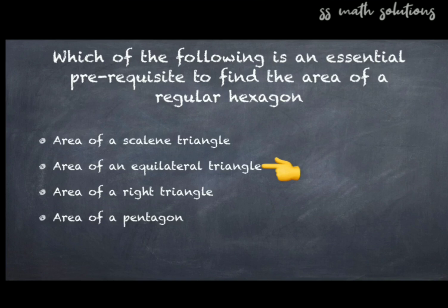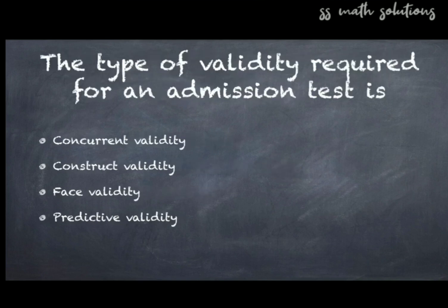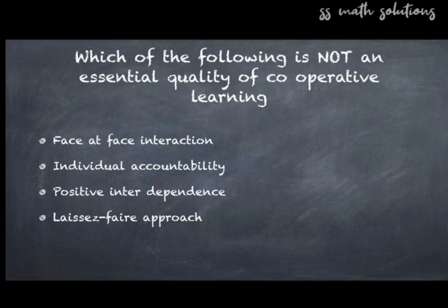Question 23: The type of validity required for an admission test is — concurrent validity, construct validity, face validity, or predictive validity? The answer is option four — predictive validity.